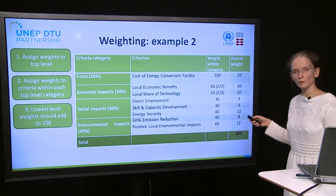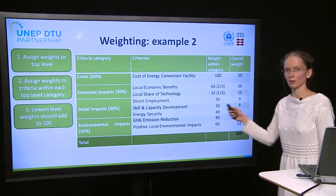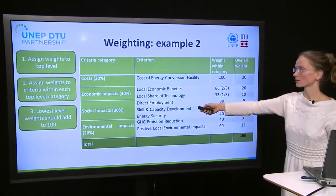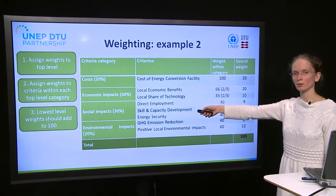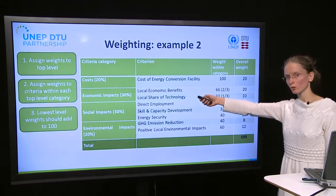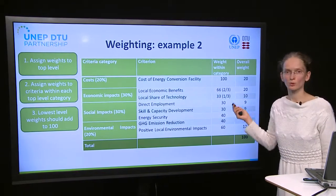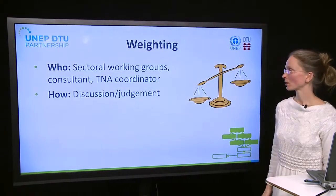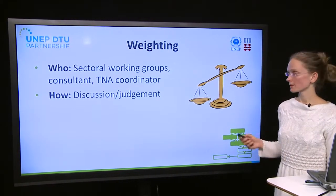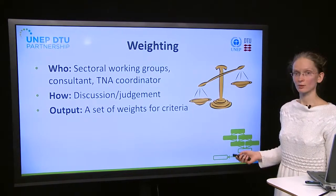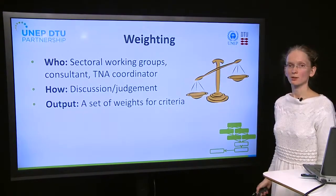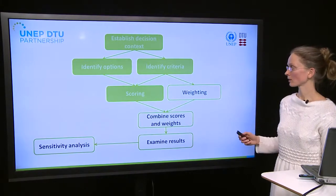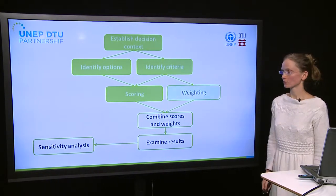It would be much more difficult to take all eight criteria and try to decide directly how much cake should go to each one — for instance, is direct employment more important than local share of technology? This is why it is good to do it in this three-category stepwise way. To summarize the weighting step: the final output will be a set of weights for all your criteria. And now we have completed the weighting.